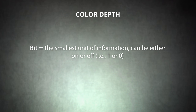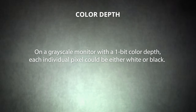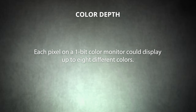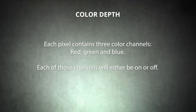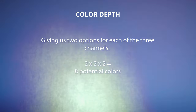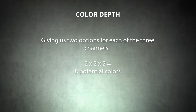A bit is the smallest unit of data and represents either an on-state or an off-state — that's either a 1 or 0 in binary. For instance, on a grayscale monitor with a 1-bit color depth, each individual pixel could be either white or black. However, each pixel on a 1-bit color monitor could display up to 8 different colors, because each pixel contains 3 color channels — red, green, and blue. Each of those channels will be either on or off, giving us 2 options for each of the 3 channels. Thus, we can multiply 2 × 2 × 2 to get 8 potential colors.